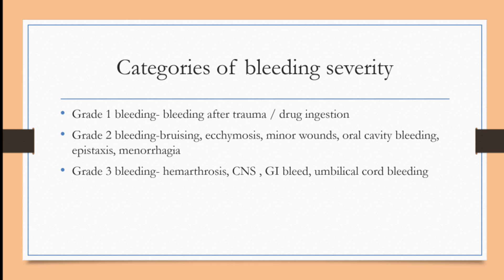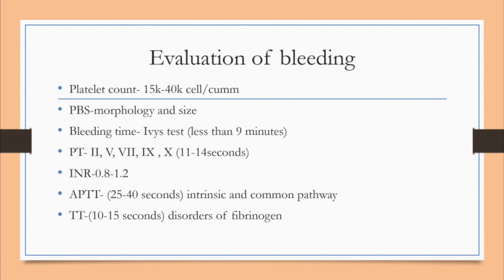When evaluating a patient with bleeding, we check the complete blood count including hemoglobin and platelets. Normal platelet count is 1.5 to 4 lakhs. If platelet count is low, we check manual platelet counting through peripheral blood smear, which tells about morphology, size of platelets, and other parameters like microcytic hypochromic anemia.